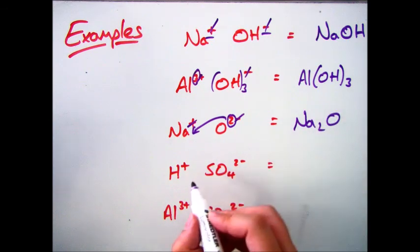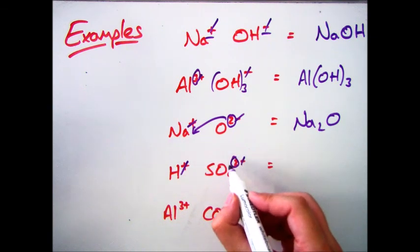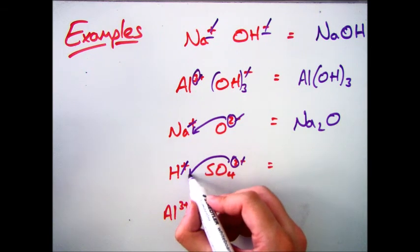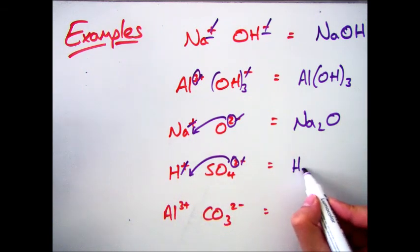The next one, we've got H+ and SO4 2-, so again, remove the charge, take that 2 and put it down below. So it gives me H2SO4, which is sulfuric acid.